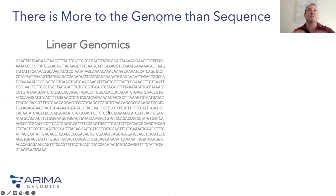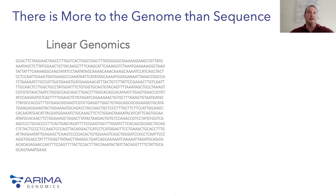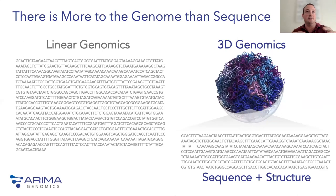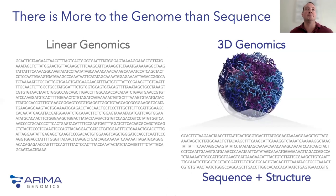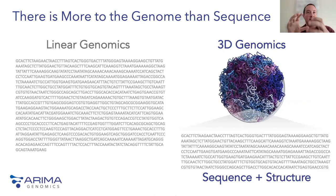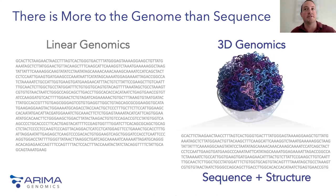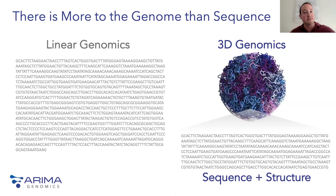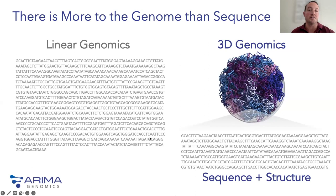A little bit about 3D genomics: I always introduce it relative to linear genomics. When we think of the genome, we often look at a linear representation of the A's, T's, C's, and G's, mapping RNA or epigenomics data back to it. However, we know that the six feet of DNA in each cell gets packaged into a microscopic nucleus, and the way it folds in three dimensions is important. So 3D genomics is the measurement of the three-dimensional folding of DNA within cells — preserving and reading out that information using next-generation sequencing. We call it sequence and structure: from a single NGS-based technology, you get both the underlying sequence and the three-dimensional structure of DNA within cells.